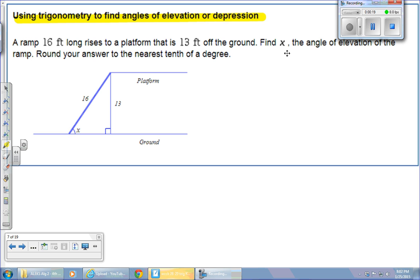So if you're in an airplane and you're looking down on the ground, that would be depression. If you're standing on the ground and you're looking at the top of the tree, that's going to be elevation.